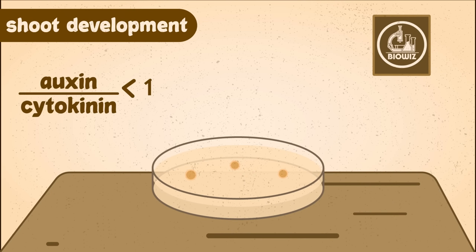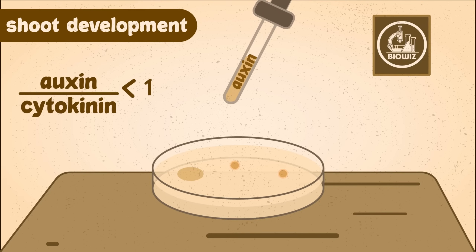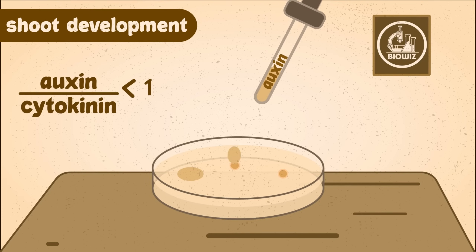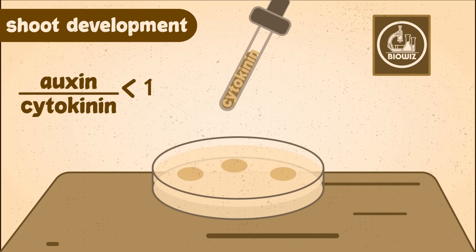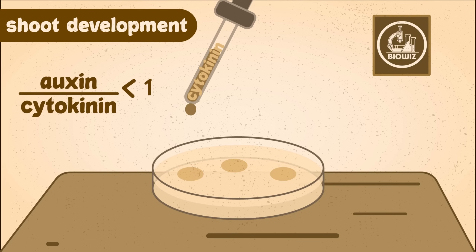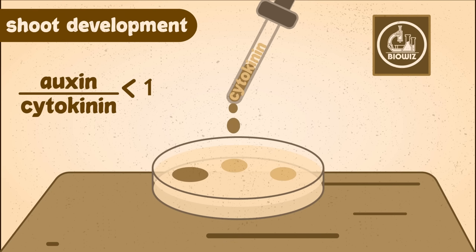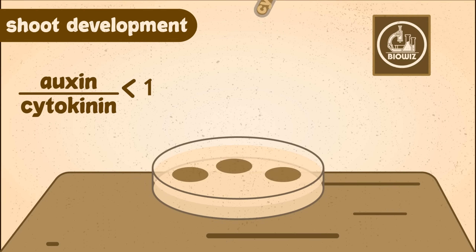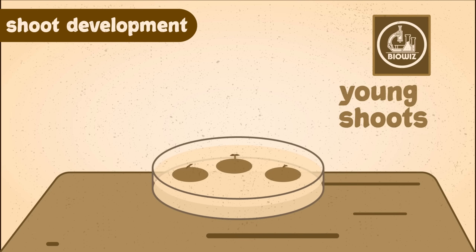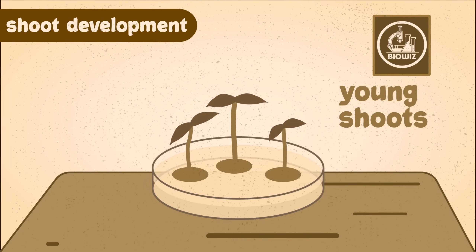For the formation of a new plant, the development of a shoot is first induced by subjecting the cells to both auxin and cytokinin, but with the ratio of auxin to cytokinin being less than one — that is, more cytokinin is used compared to auxin. Soon enough, young shoots start developing from the undifferentiated cells.